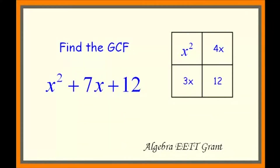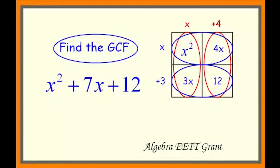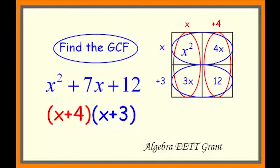Now we factor out the greatest common factor from the columns and rows. Looking at the columns: x squared and 3x have an x in common; 4x and 12 have a 4 in common. Since the x term is positive, the constant is plus 4, giving us the factor x plus 4. Looking at the rows: x squared and 4x have an x in common; 3x and 12 have a 3 in common, and since the x term is positive, it's plus 3. So x squared plus 7x plus 12 factors into (x + 4)(x + 3).